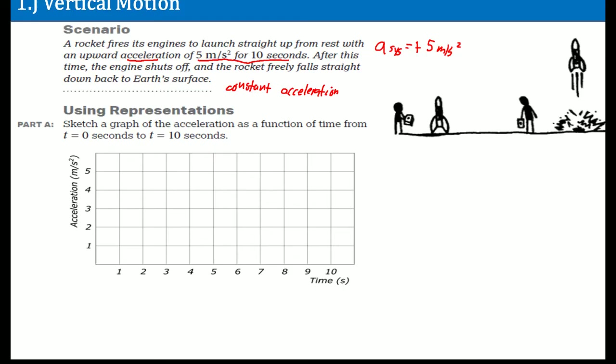From the start, it goes all the way up to 5 meters per second squared. So you can start here at 5 meters per second squared. The graph had an animation error — this should be down here, at 5 meters per second squared on the axis.